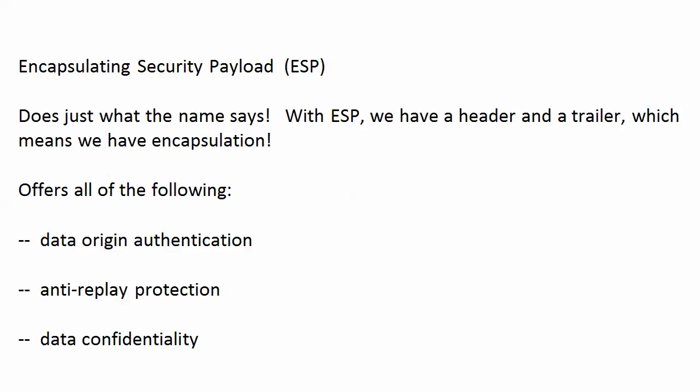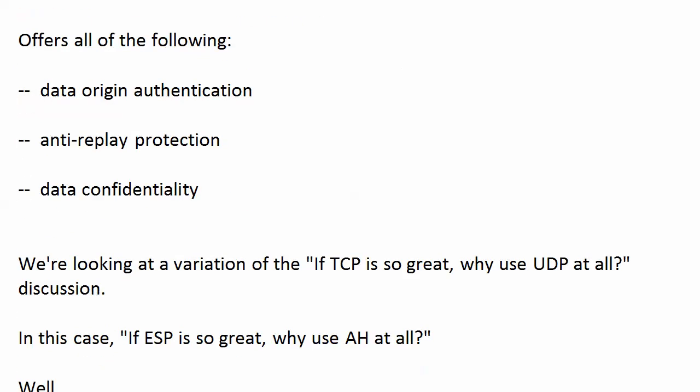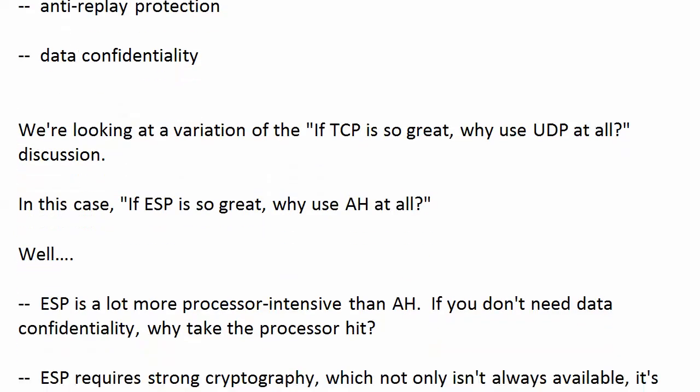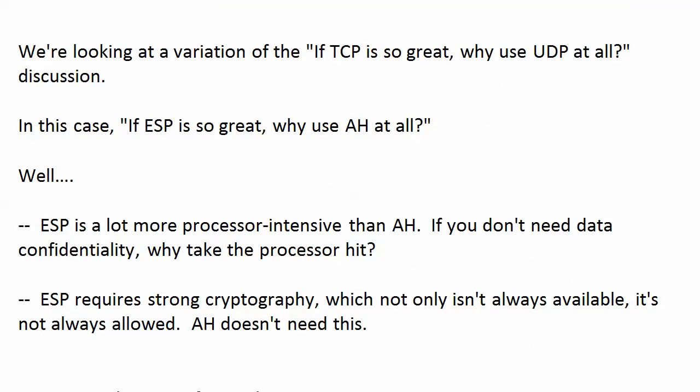This is a variation of an argument we had early in our CCNA studies: if TCP is so great with all its features, why use UDP at all? The answer was overhead. Similarly, if ESP is so great — especially offering data confidentiality — why use AH at all? ESP is a lot more processor-intensive than AH. Don't pay for something you don't need: if you don't need data confidentiality, why pay for it in the form of processor overhead?